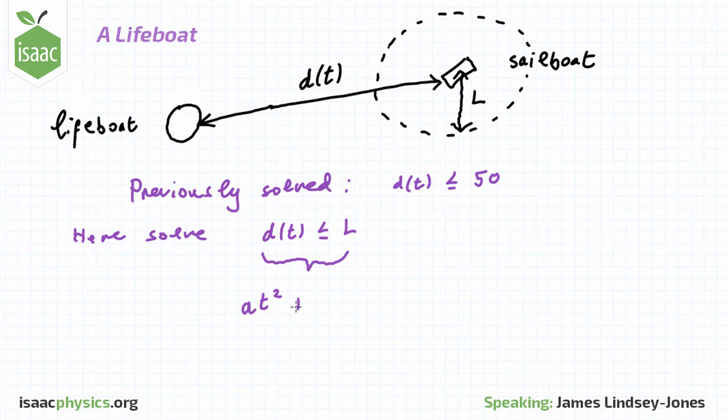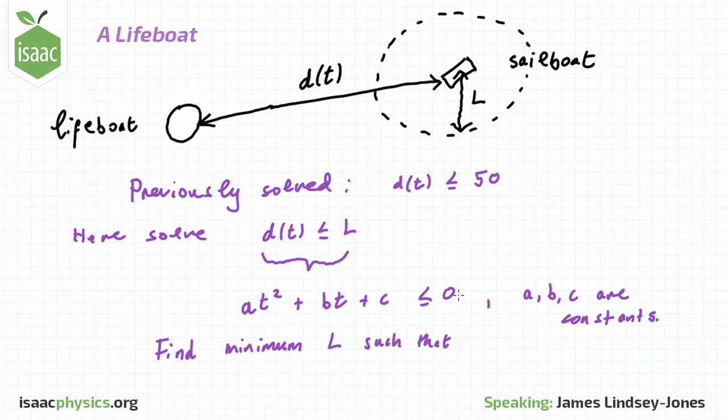This should give you a quadratic in t of the form a t squared plus b t plus c is less than or equal to 0. From here you should be able to find the minimum L such that this quadratic has real solutions.